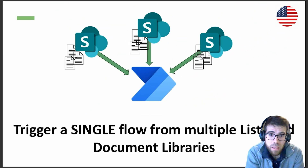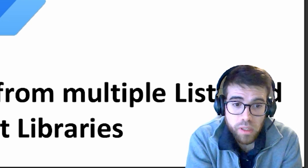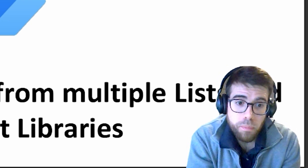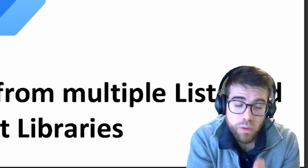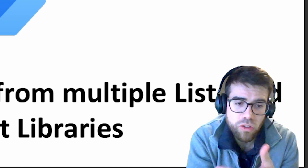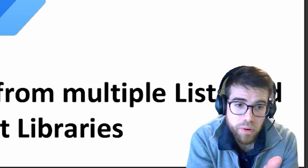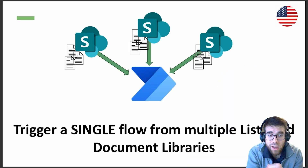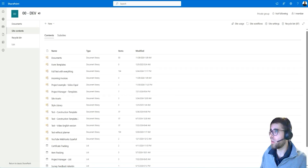If you need to apply the same business logic to multiple document libraries or lists, you are probably building a flow for each of the document libraries that gets triggered when there's a change — a new file or changes in the list or library. With this video you'll find out how to overcome that obstacle. Let's see how this works live before jumping into the explanation.